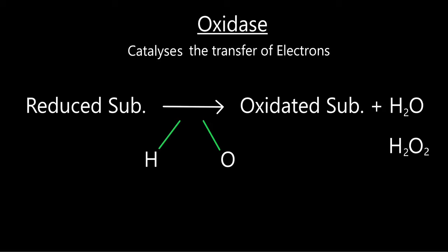For now we have the oxidase. This catalyzes the transfer of electrons. We have a reduced substance which wants to turn into an oxidized substance. The oxidase turns it into an oxidized substance with H2O, because it uses H and O - hydrogen and oxygen - to oxidize the substance.